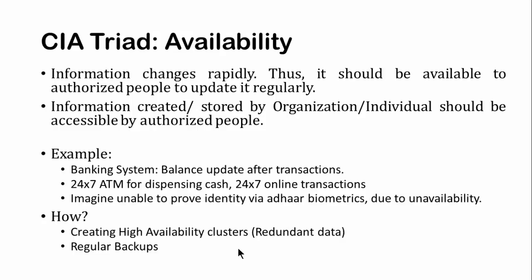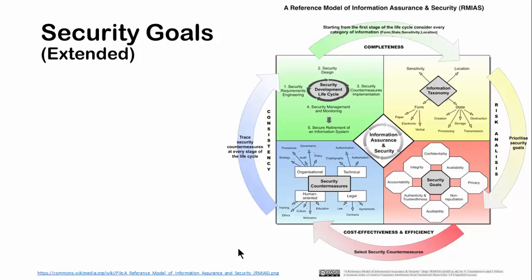The CIA Triad focuses on information confidentiality, information integrity, and information availability - but it doesn't address many other factors. There is another model called the RMIAS model, or Reference Model of Information Assurance and Security. In this model there are four quadrants covering different kinds of information. One quadrant covers the security goals we have seen - confidentiality, availability, and integrity - but it also has five more goals, making eight goals in total.